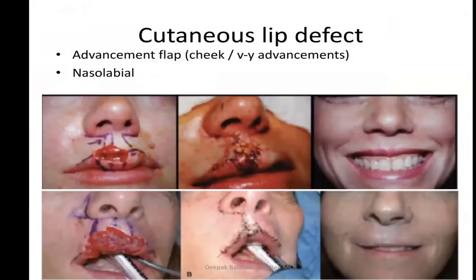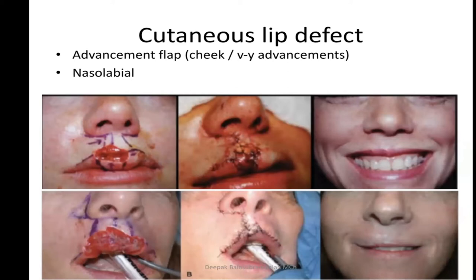It's always better to reconstruct mucosal defects by advancements, a vermilion switch, bipedicled vermilion transfer, or vestibular mucosa transfer, because they replace like with like — that is, secretory mucosa. For cutaneous defects, advancement flaps or V-Y advancements can be used; in the area below the lip, a nasolabial flap can be used in certain instances.